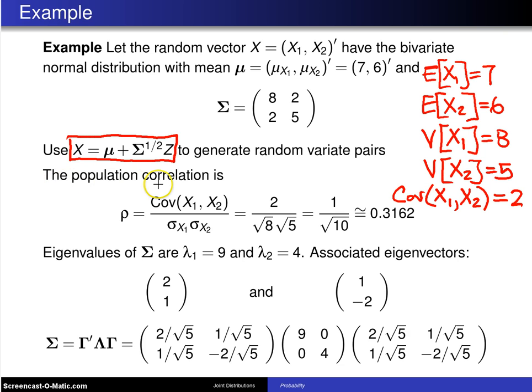Well first of all, the population correlation, if you want to know what the value of rho is, by definition rho is the covariance divided by the two standard deviations. The covariance is 2, so that goes in the numerator. The standard deviation of X1 is the square root of 8. The standard deviation of X2 is the square root of 5. So you get 1 divided by the square root of 10 and that turns out to be 0.3162.